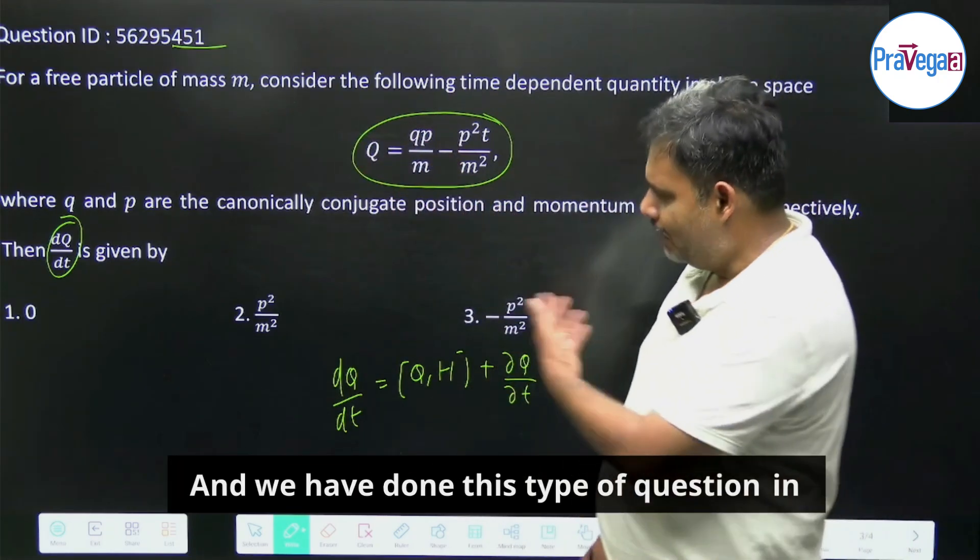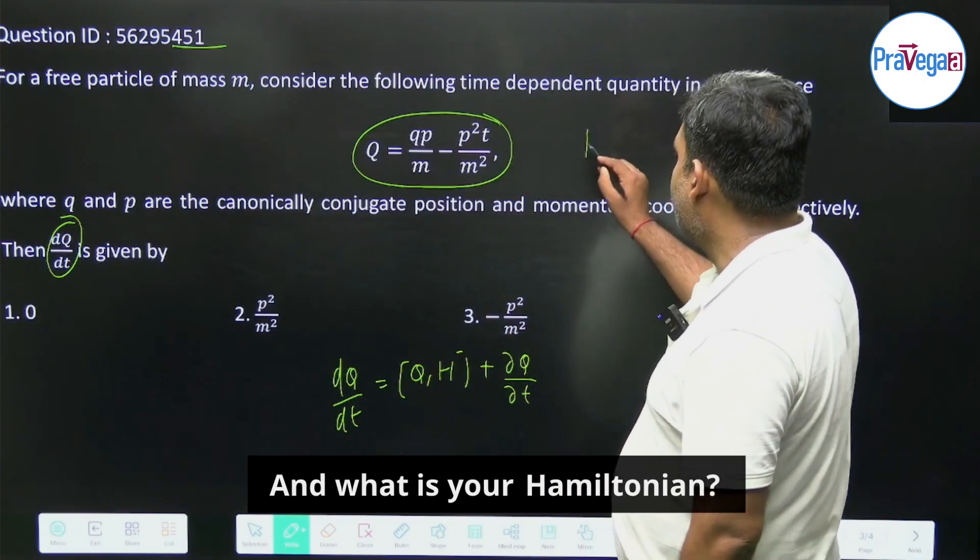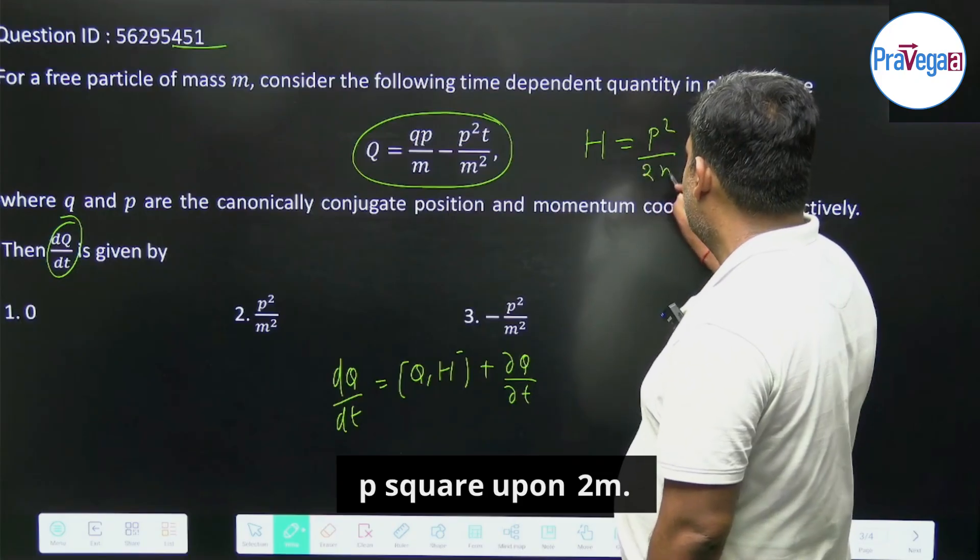We have done this type of question in our classroom also, so you all know. And what is your Hamiltonian? Hamiltonian for free particle is nothing but p squared upon 2m.